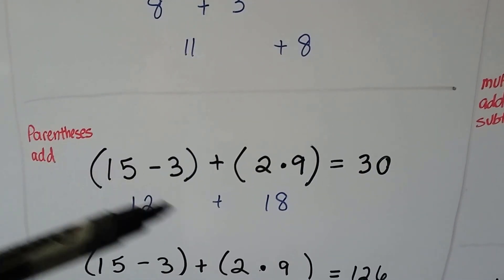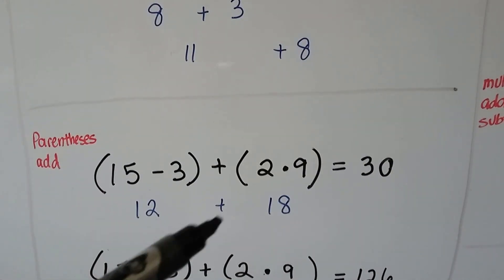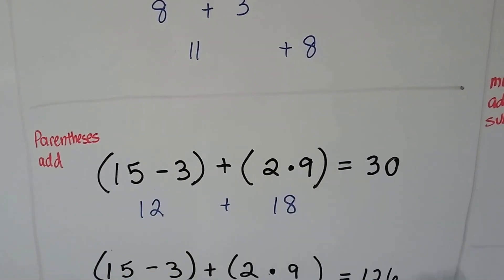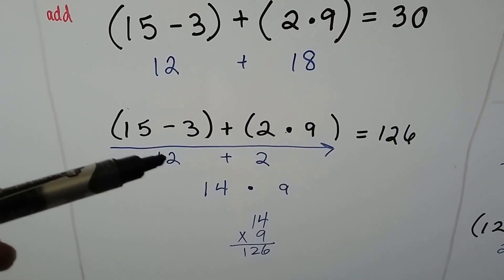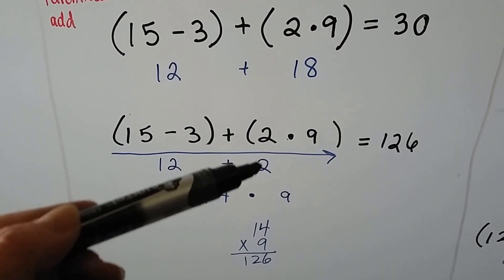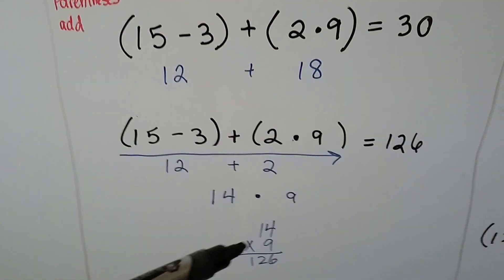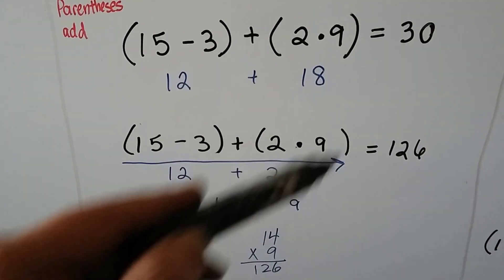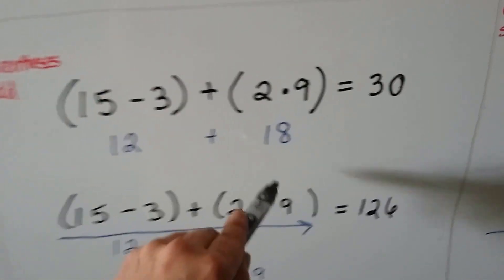In this one, we're going to do parentheses, and then we're going to add them together. So we have 12 plus 18 equals 30. If we had gone straight across, we would have had 12 plus 2, which is a 14. Then we would have multiplied it to the 9, and we would have had 126. This is the correct way. This is the wrong way.